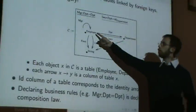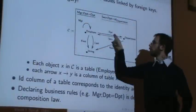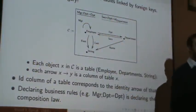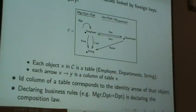Each object is an employee, and all the arrows out of it, like one, two, three, four, are the columns of that table.